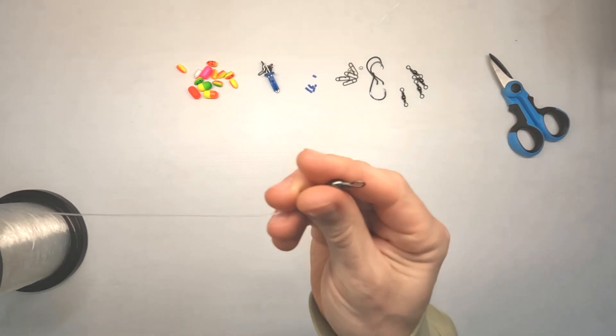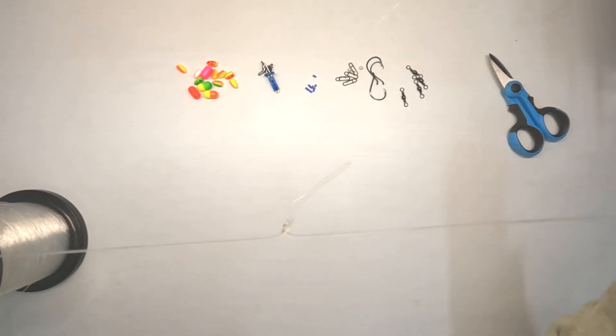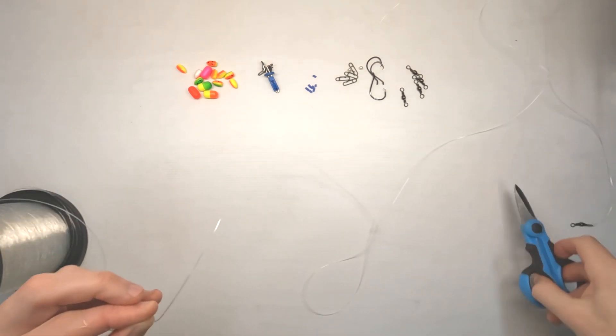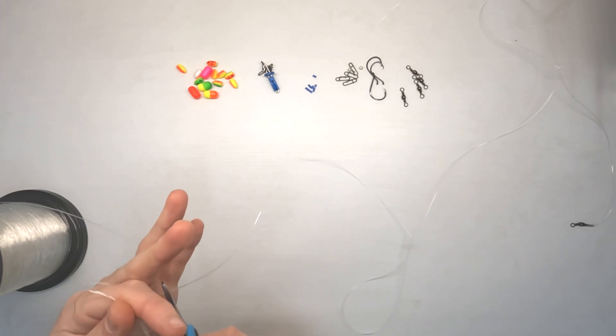So then what we have is the swivel here, the first loop, second loop, and then we're going to come down about another 300. Just clip that off.